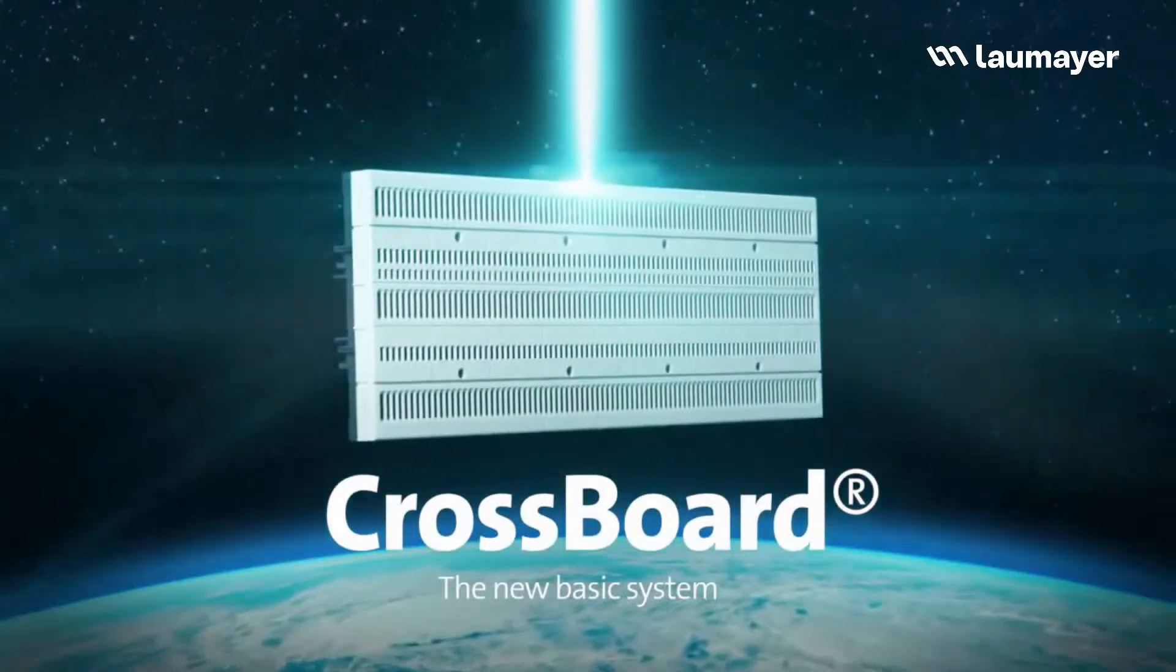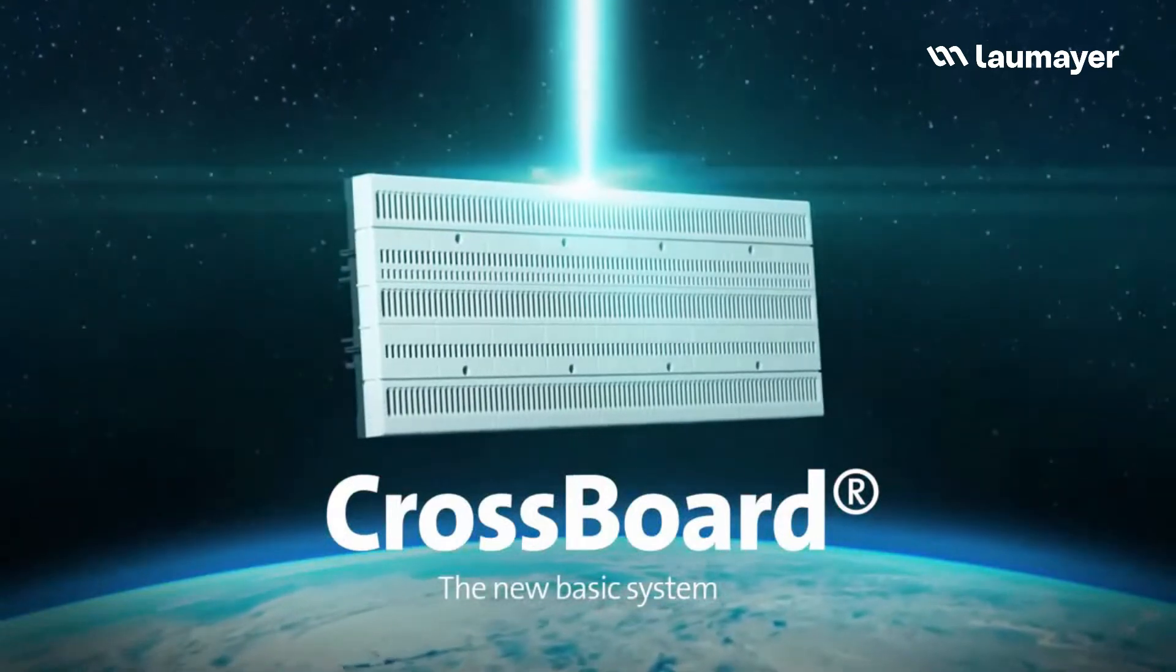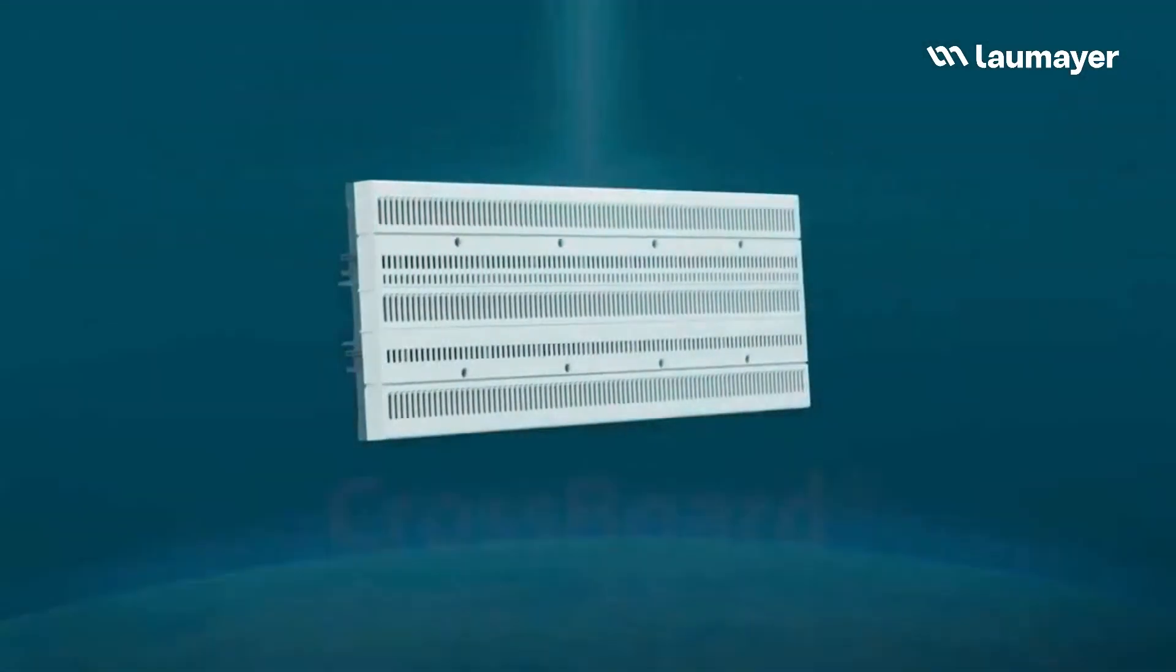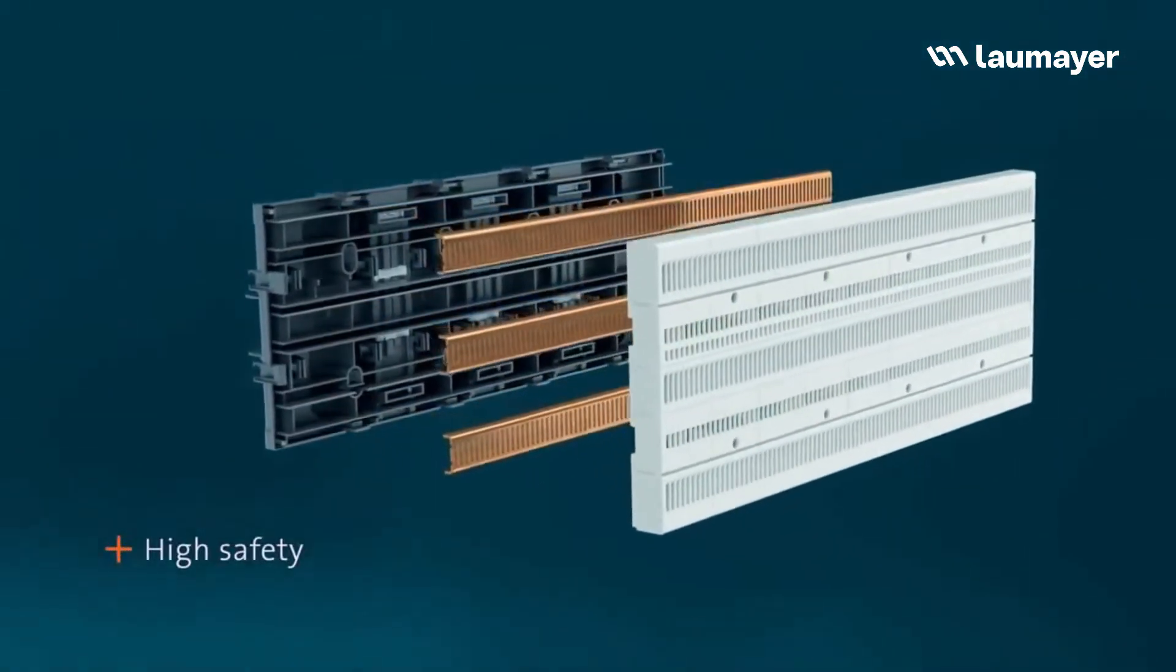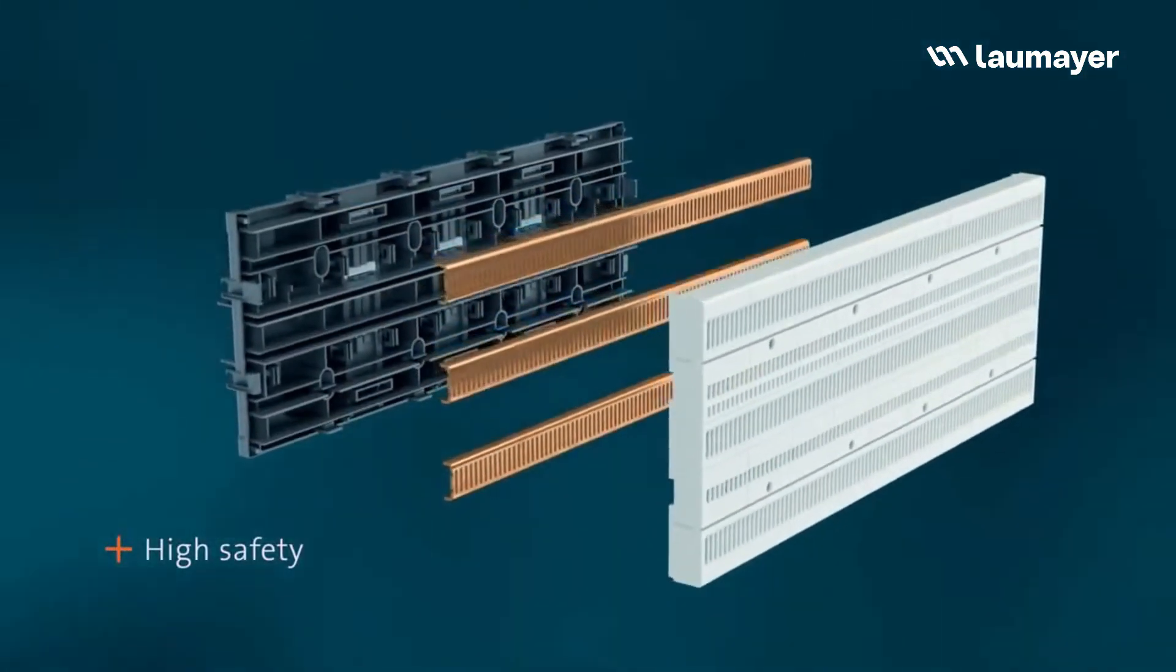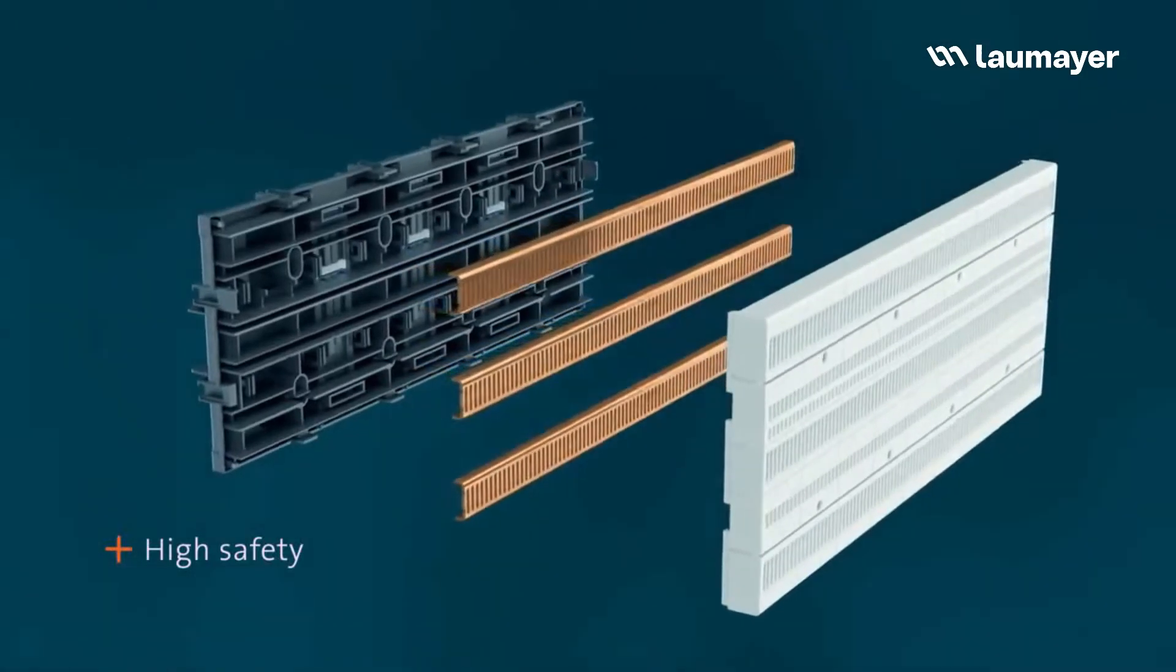Cross Board, the new basic system from Werner, for power distribution up to 125 amps, a compact unit made of bus bars, holders and covers. This is Cross Board.